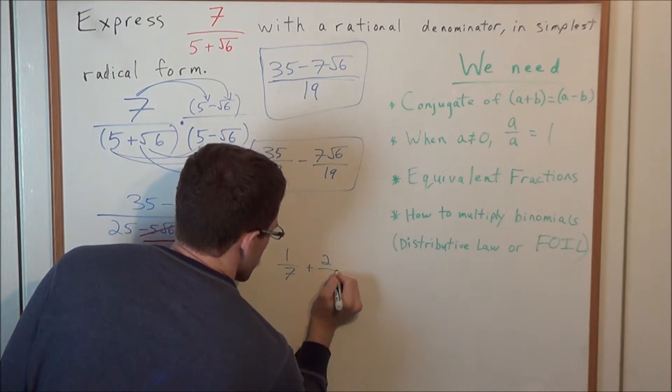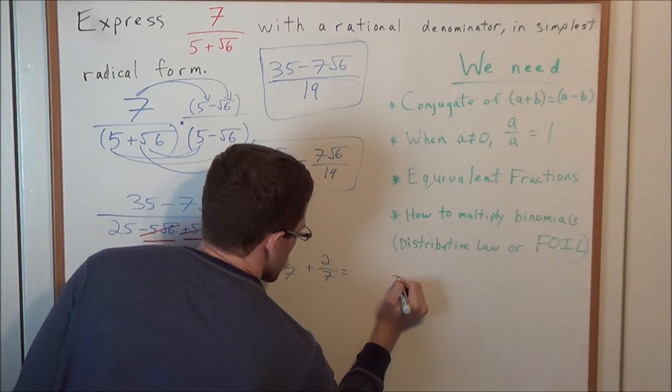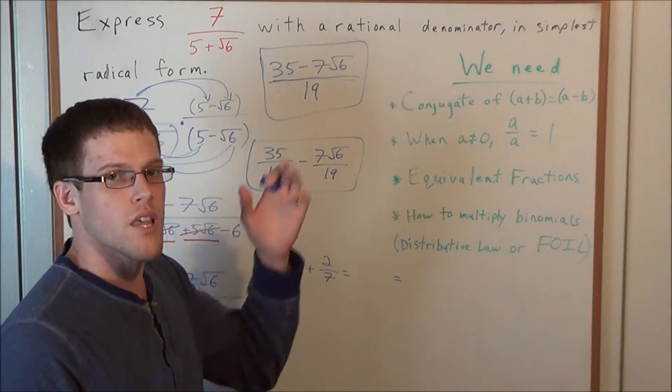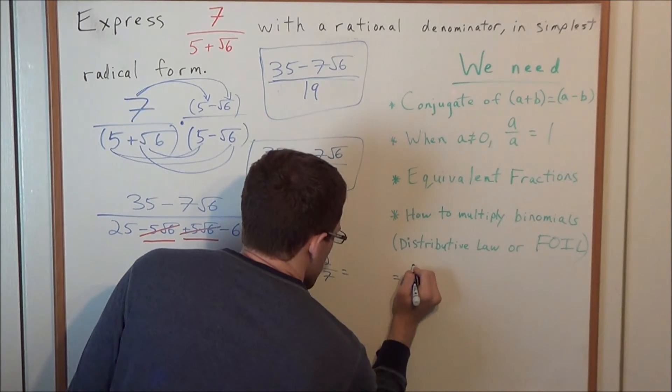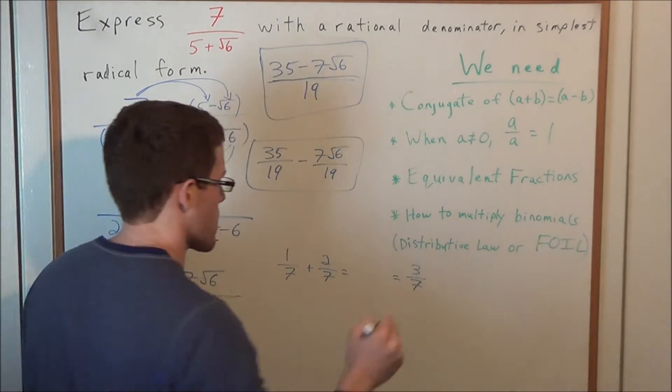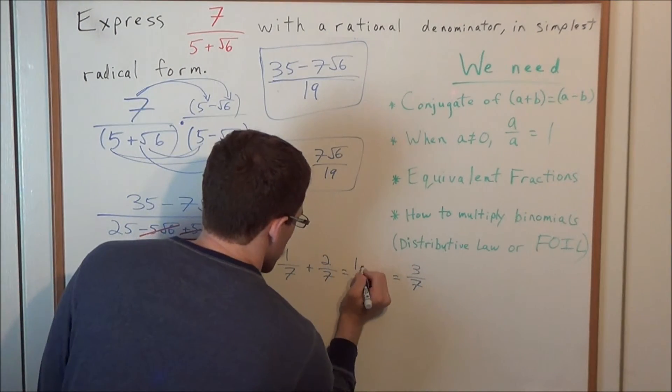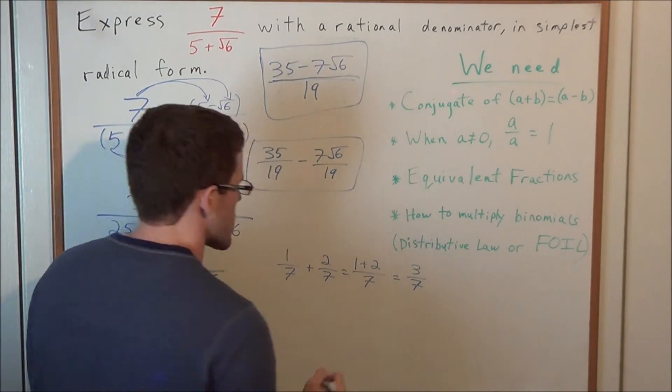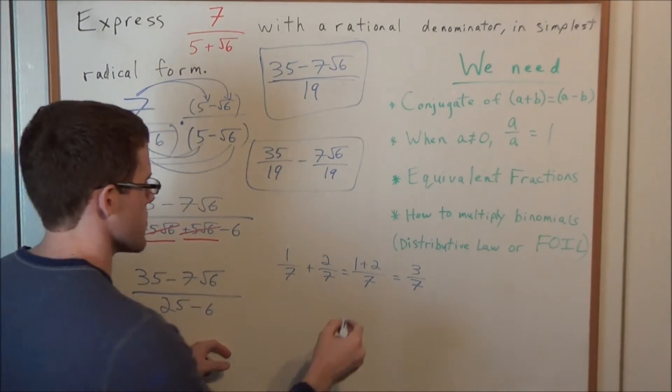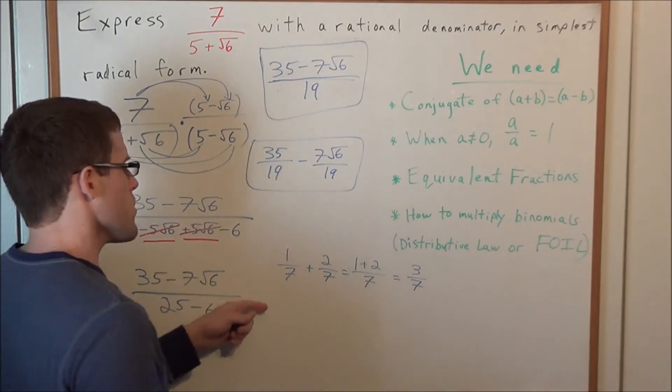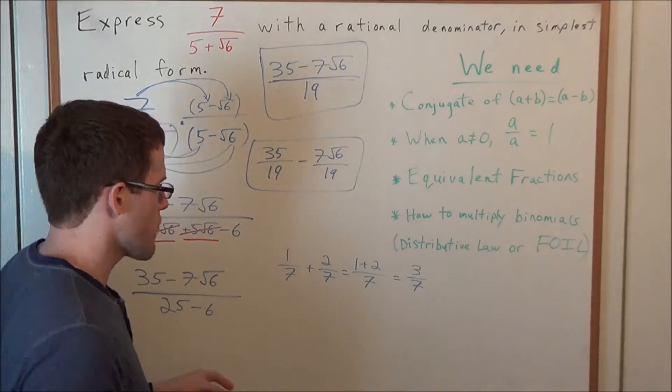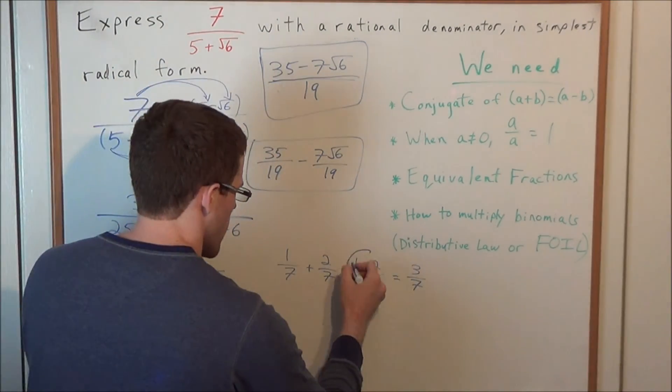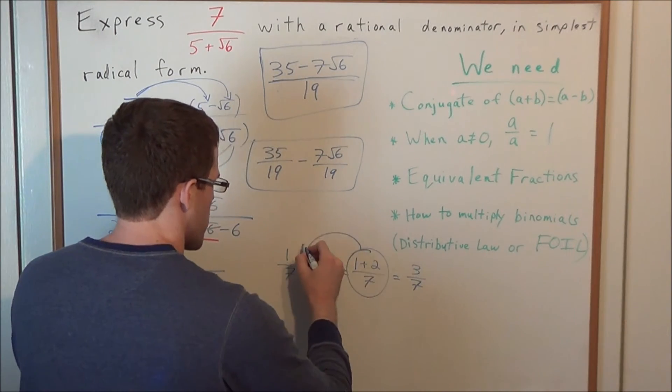...when you're doing something like this, 1 over 7 plus 2 over 7, you're so used to doing this problem, you do it lightning quick in your head now, that you just quickly jump to 3 over 7. But the in-between step that you're ignoring, because you've done it so many times, is this 1 plus 2 divided by 7. So we're used to thinking from left to right really fast, but sometimes we need to slow down and think from the middle term, going back to the left.